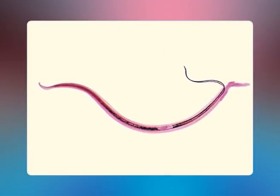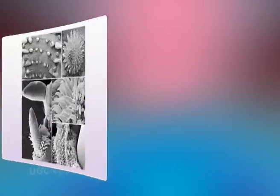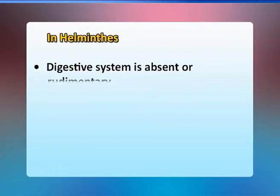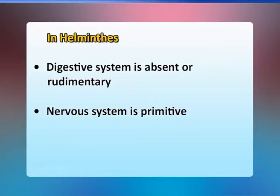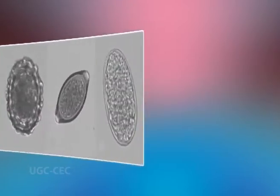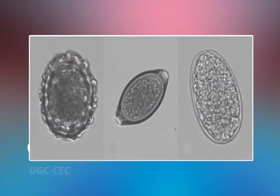Helminths do not possess organs of locomotion; locomotion is generally by muscular contraction and relaxation. The outer covering known as cuticle or integument is tough and may be armed with spines or hooks, and is resistant to intestinal digestion. The digestive system is efficient or rudimentary, the nervous system is primitive, and the reproductive system is very well developed. Eggs are produced in enormous numbers as few of them survive to infect a suitable host.